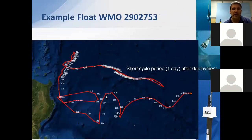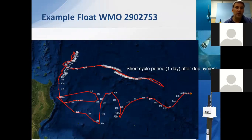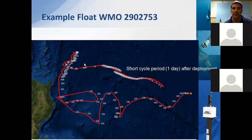Here is another example of a six-variable Provor CTS-4 trajectory. After deployment, the cycle period was very short and GPS positions at transmission were very close together. Then, by telecommand, the user changed the cycle period to several days and the distance between each location increased. This characteristic is now essential, as all BGC Argo floats must contribute to the core Argo mission by realizing a deep profile at 2,000 decibar every 10 days — a strong recommendation from the Argo steering team. This way, you can combine high-frequency profiling for BGC applications while also providing the core Argo dataset every 10 days at maximum pressure.